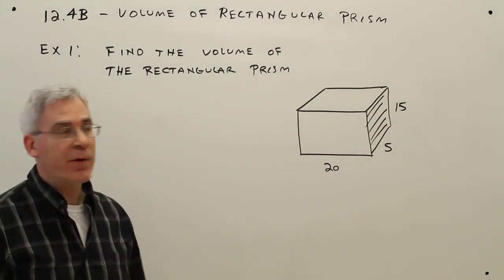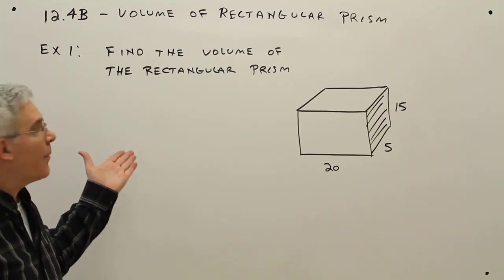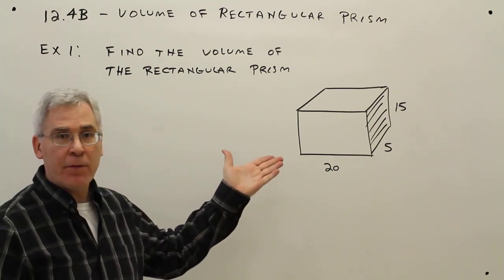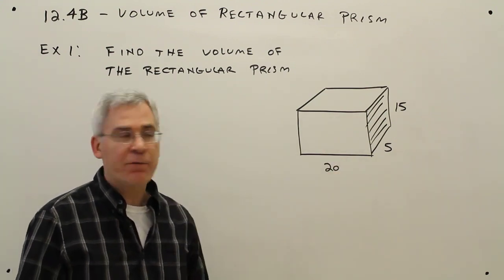Welcome to video 12.4b, Volume of a Rectangular Prism. Here's the first example. Find the volume of the rectangular prism shown with dimensions of 20 by 5 by 15.